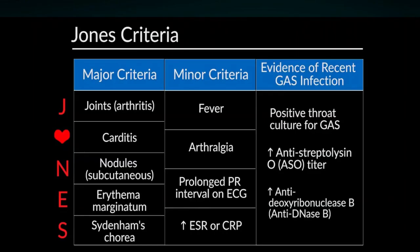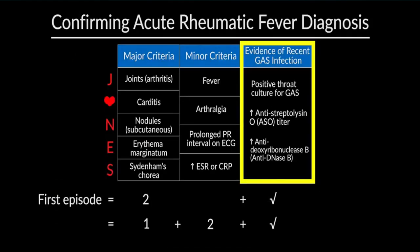Key investigations include: first, a throat swab to identify Streptococcal infection; second, the ASO (Anti-Streptolysin O) titer test; and third, the Anti-DNase B (anti-deoxyribonuclease B) test. Diagnosis of Rheumatic Fever requires two major criteria or one major plus two minor criteria, with evidence of prior Streptococcal infection.